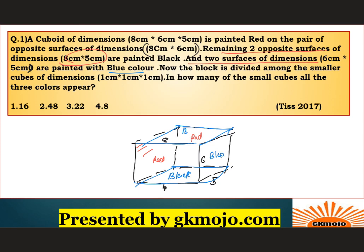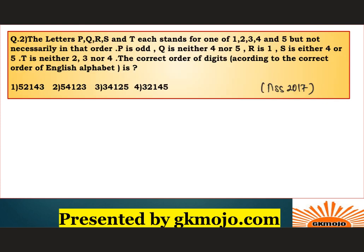Now the block is divided into smaller cubes of 1 × 1 × 1. In how many small cubes do all three colors appear? Only the cubes at the corners will have all three colors, because a corner cube touches one red face, one black face, and one blue face. There are 8 such corner cubes, so option 4 — eight — is the correct answer.